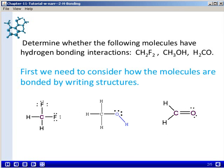First, we'll need to consider how those molecules are bonded by writing Lewis structures for all three of them, and those are given here. When you write the Lewis structure, you can get more detailed information about what atoms are bonded to what other atoms.